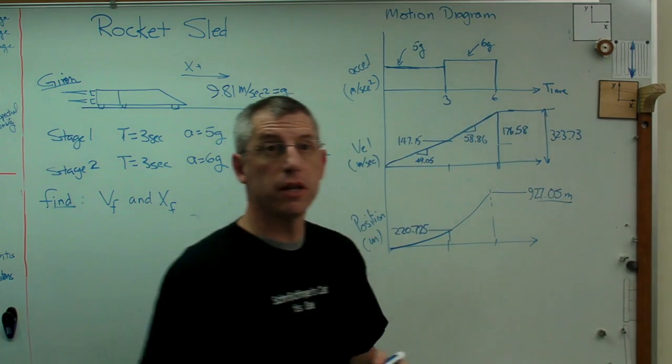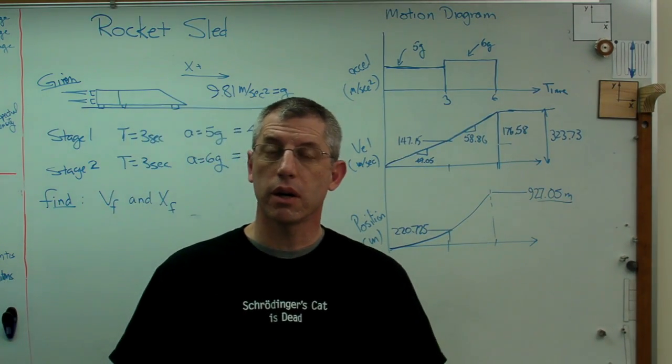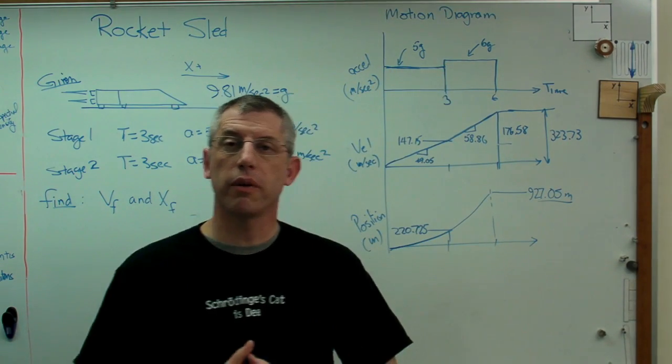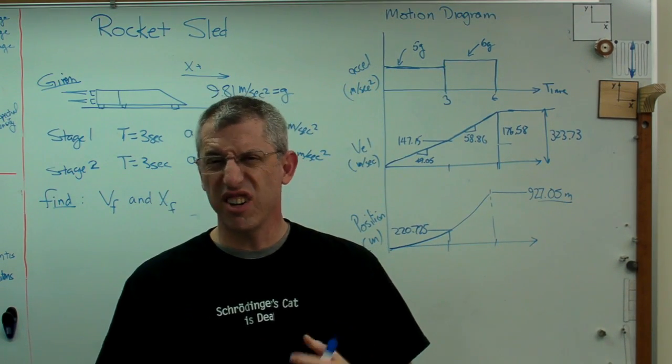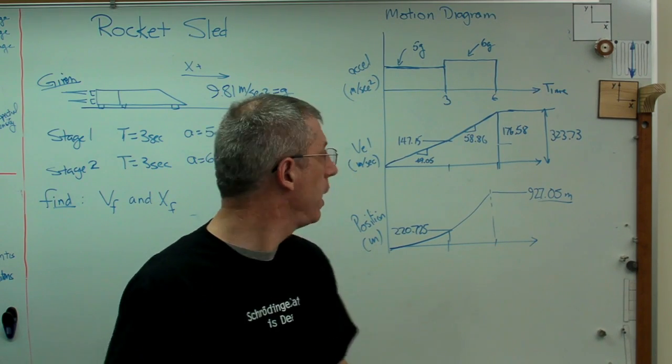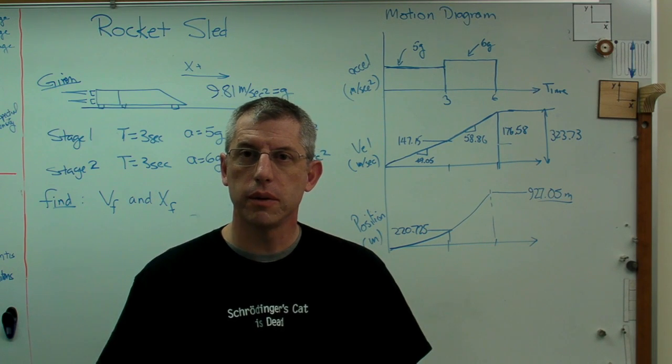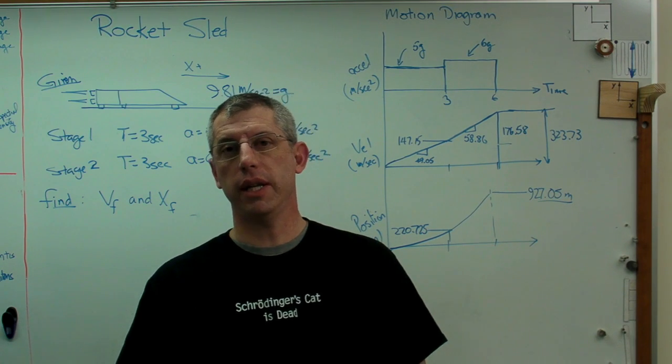So there you go. Simple problem with constant acceleration at the first three seconds and then another different constant acceleration for the next three seconds. So non-constant acceleration overall, we've solved it two ways now. One algebraically and one with motion diagrams. I hope this helps, and I'll see you next time.